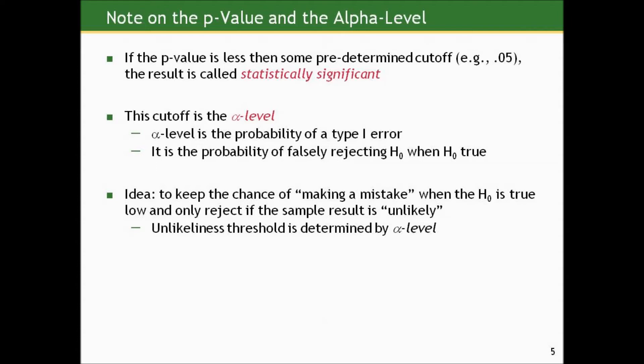How do we deal with the p-value in terms of deciding between the null and alternative hypothesis? If the p-value is less than some predetermined cutoff — like that magical 0.05 — the result is called statistically significant. This cutoff is the alpha level, the rejection level. It's the probability of making a type 1 error we're willing to live with. You're essentially setting the probability of falsely rejecting the null when the null is true at some low level, such that things that come in under that probability you're going to rule as inconsistent with the null and reject it. The idea is to keep the chance of making a mistake when the null is true low, and only reject if the sample result is unlikely. This unlikeliness threshold is determined by the alpha level, which more often than not is set at 5%.